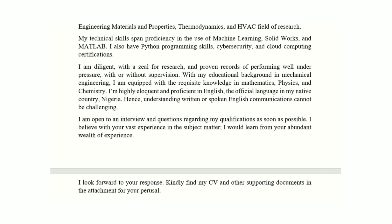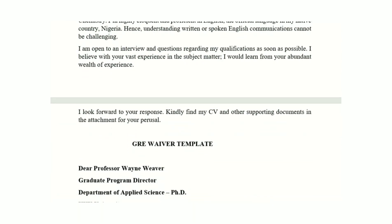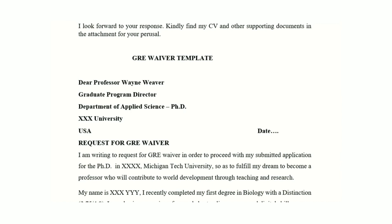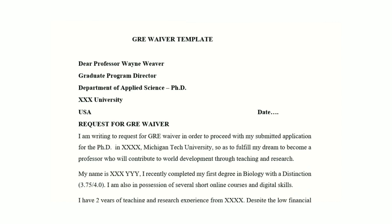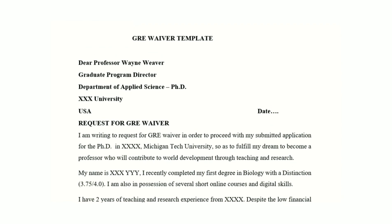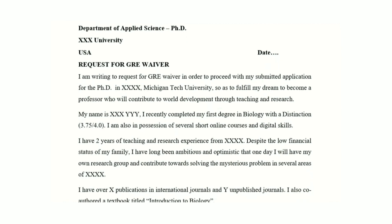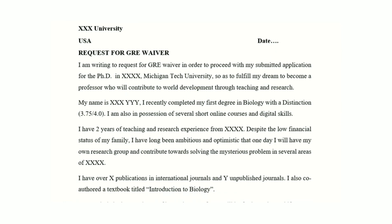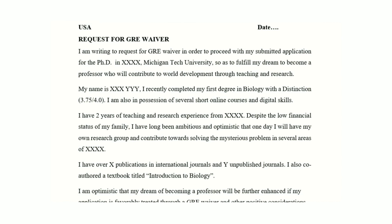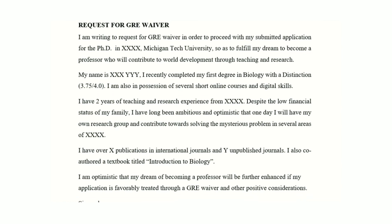Here is another important document not mentioned above but very crucial: you might have a reason to request that the graduate school waive the GRE requirement for you. Here is a template for a GRE waiver request: 'I am writing to request a GRE waiver in order to proceed with my application.' You have to state your stronghold — what strong things can you use to convincingly show you are a fit candidate, especially if you have a very strong CGPA and some experience? Leverage on all those.